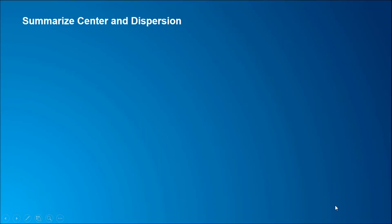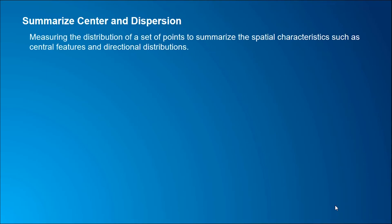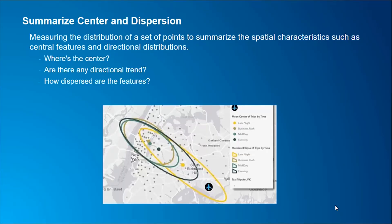Another new tool that we added in this release is the Summarize Center and Dispersion tool. This tool measures the distribution of a set of points to summarize the spatial characteristics, such as central features and directional distributions. We can use this tool to answer questions like: where is the center? Are there any directional trends in my data? How dispersed or compact are my features?